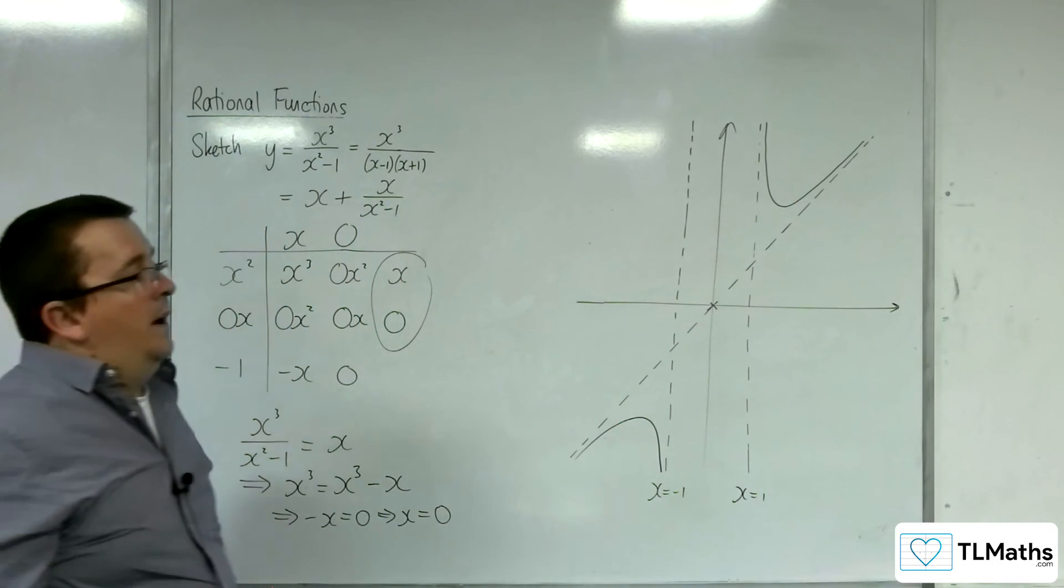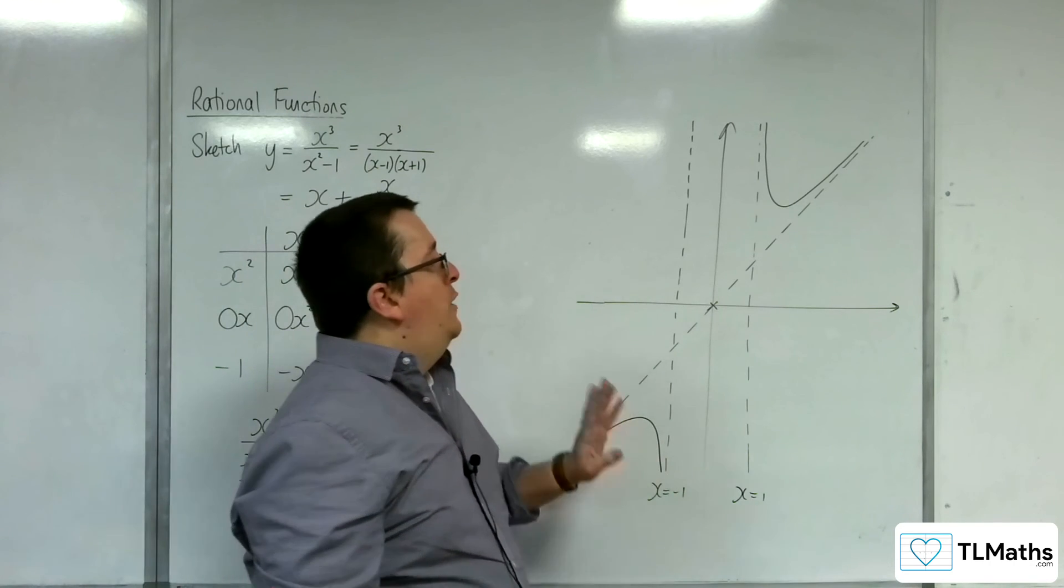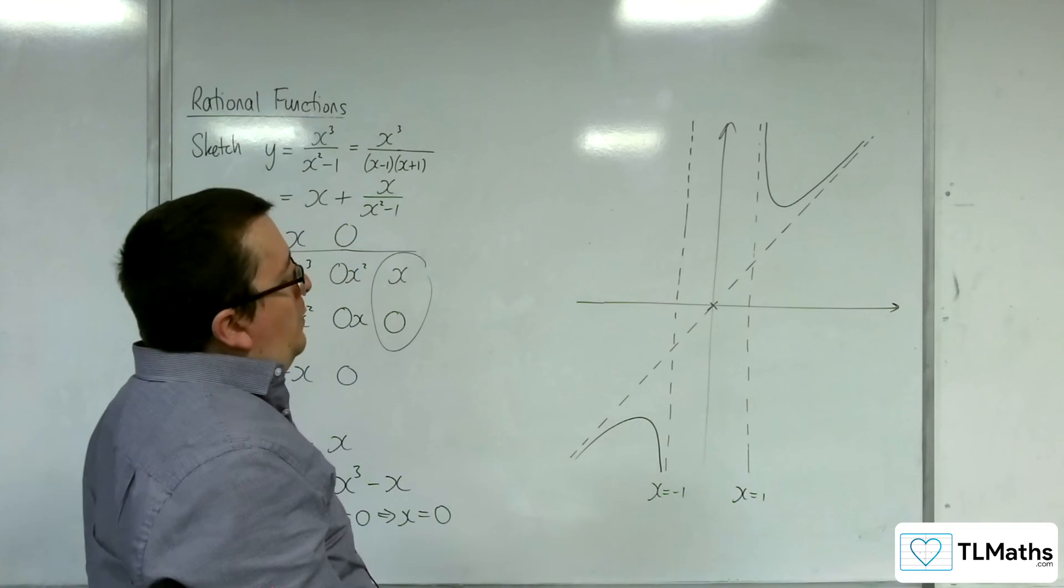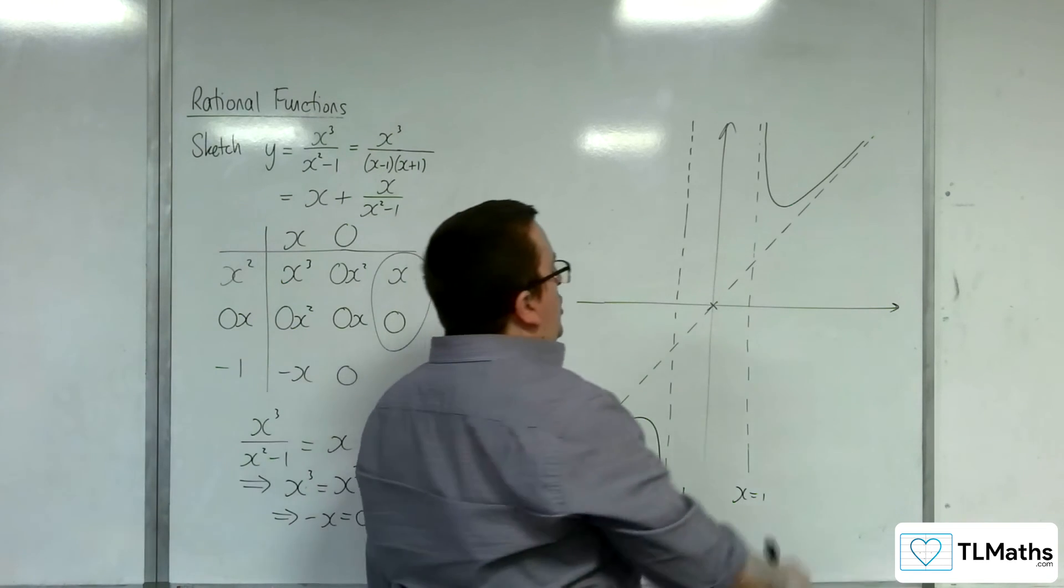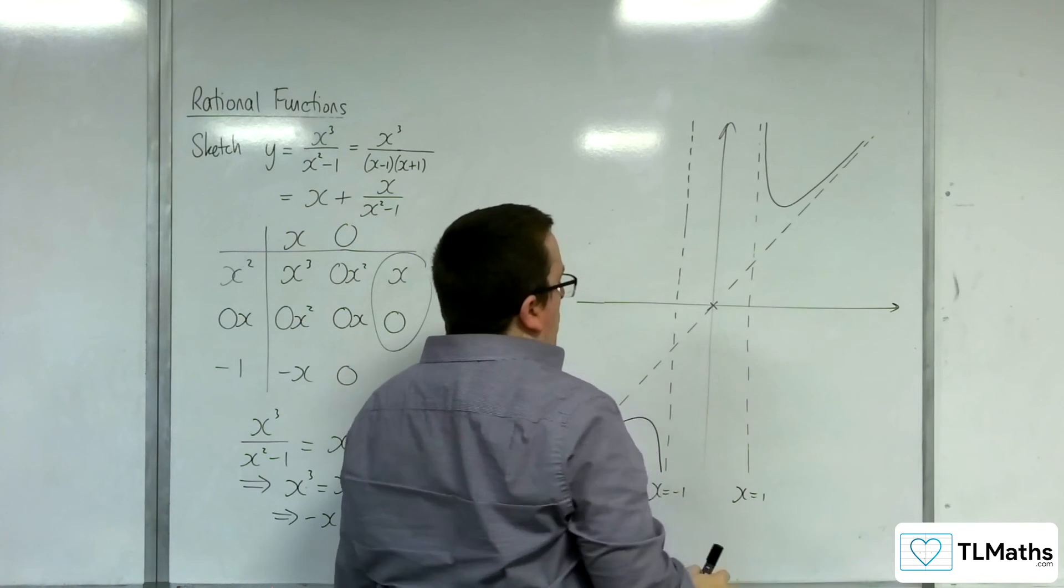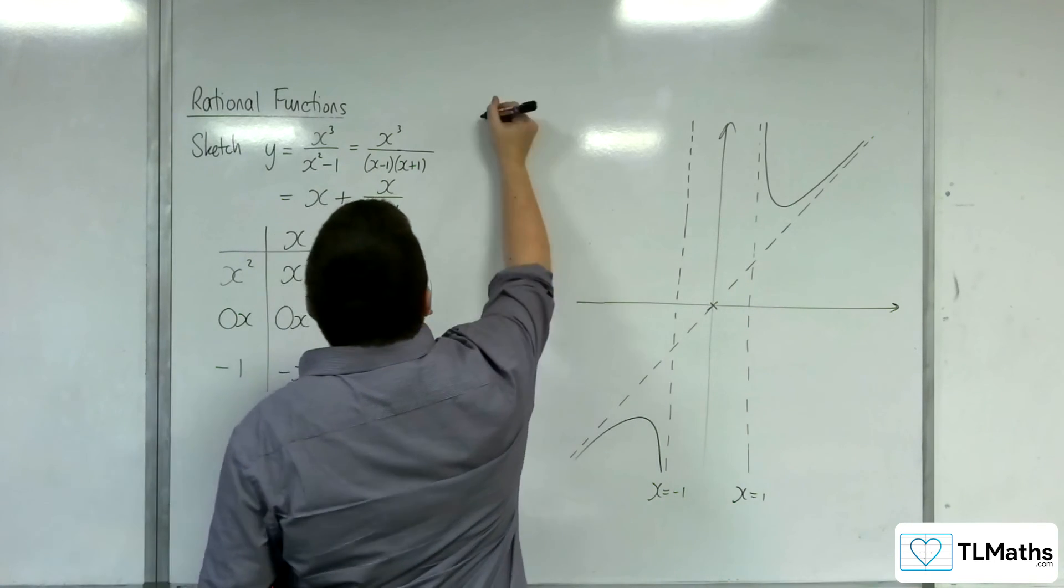Because that's the only things it could be doing in order to tend to both those asymptotes and cross through the origin. So let's just try a point, we need to check whether it is above or below the x-axis, let's say between 0 and 1. So let's try x = 1/2.